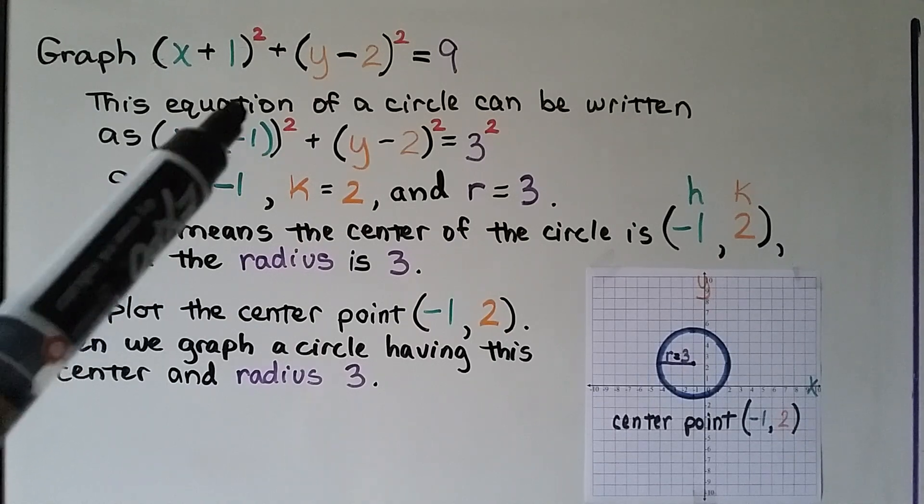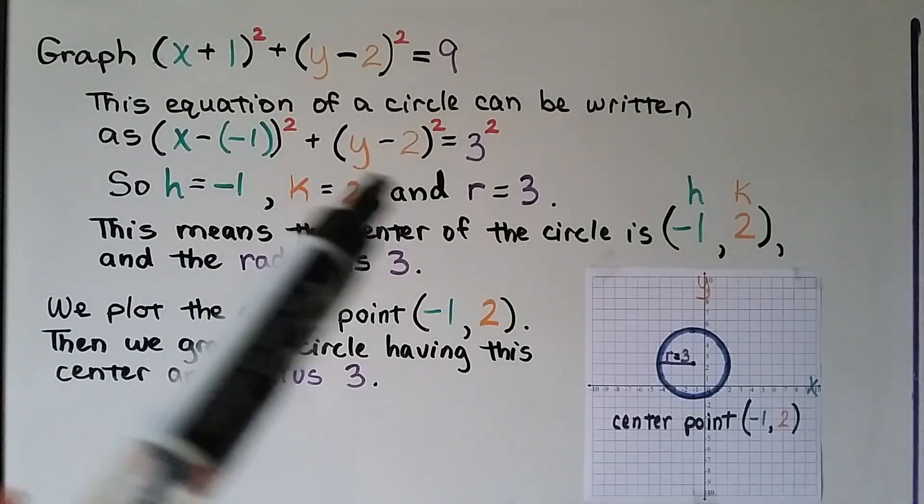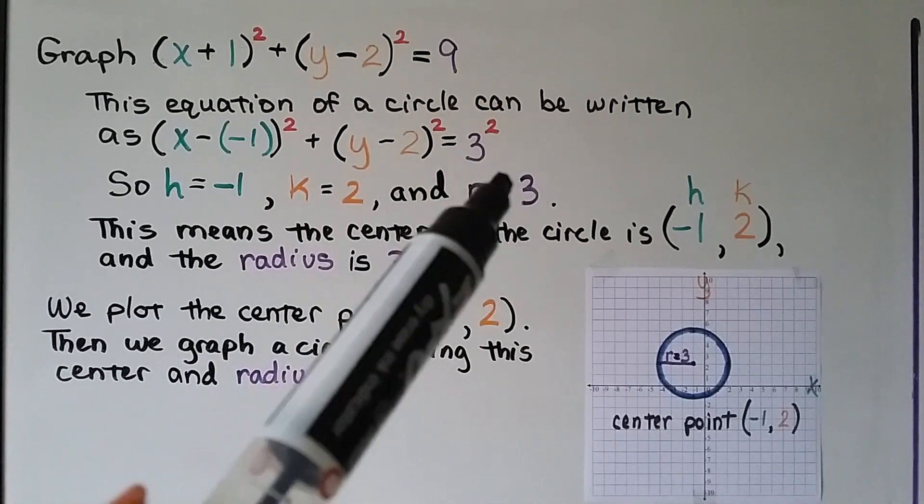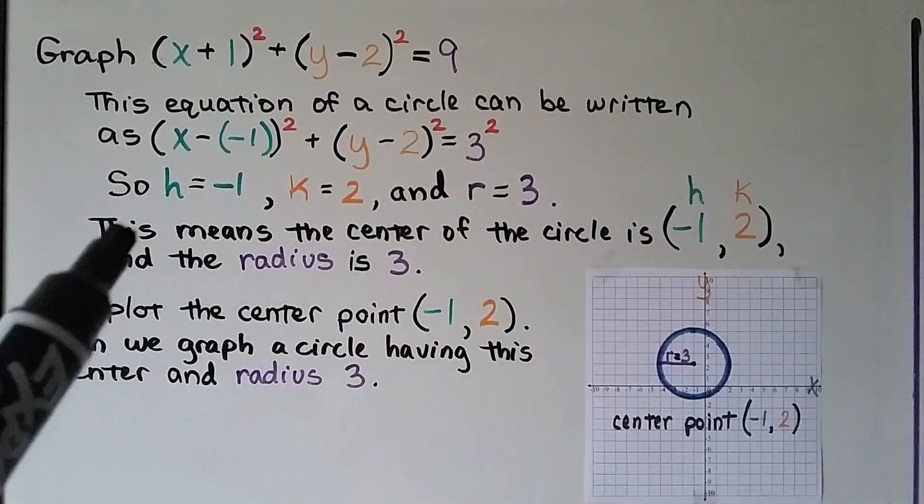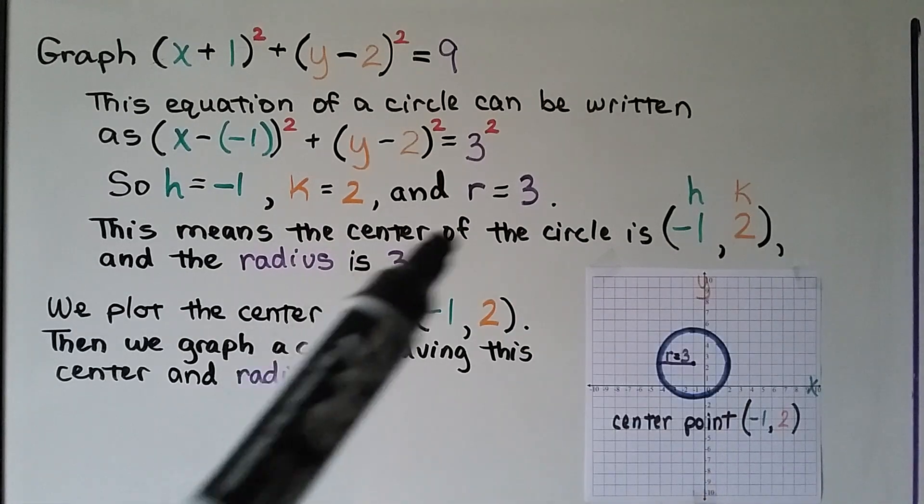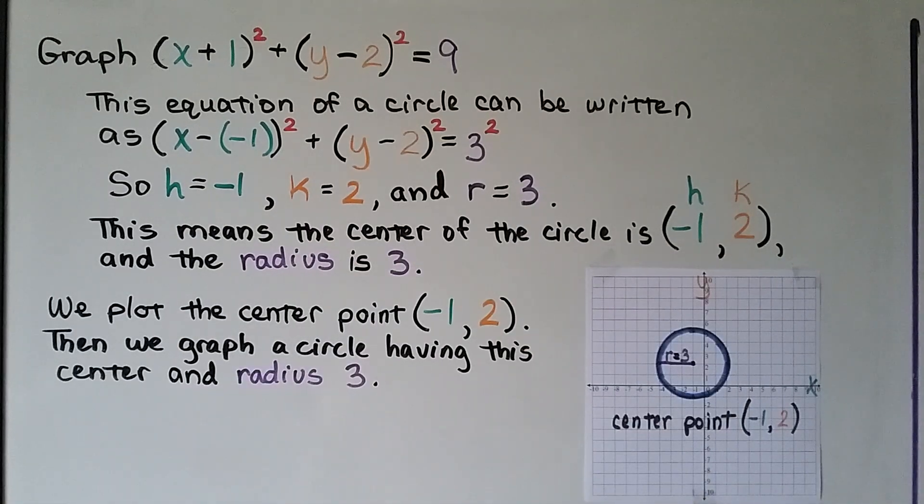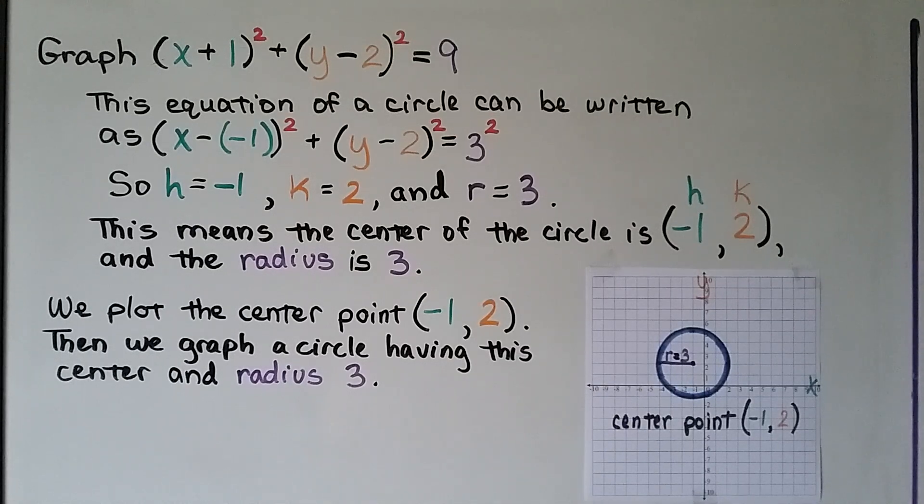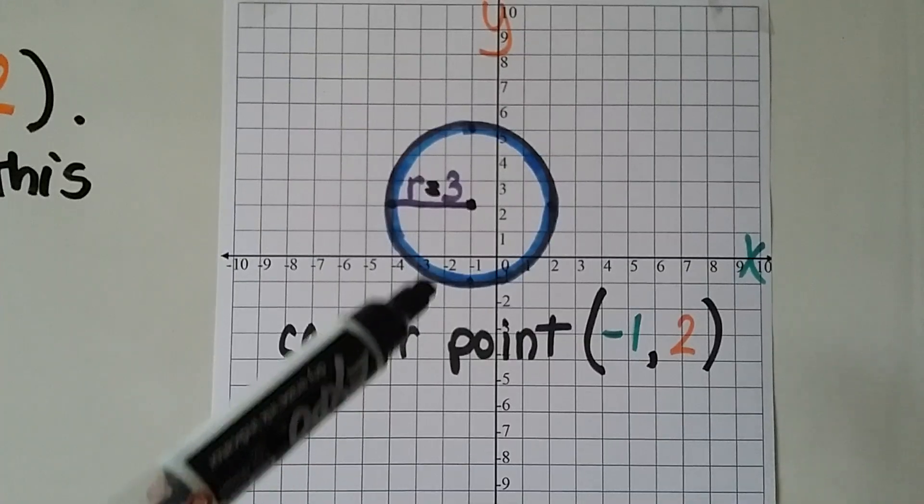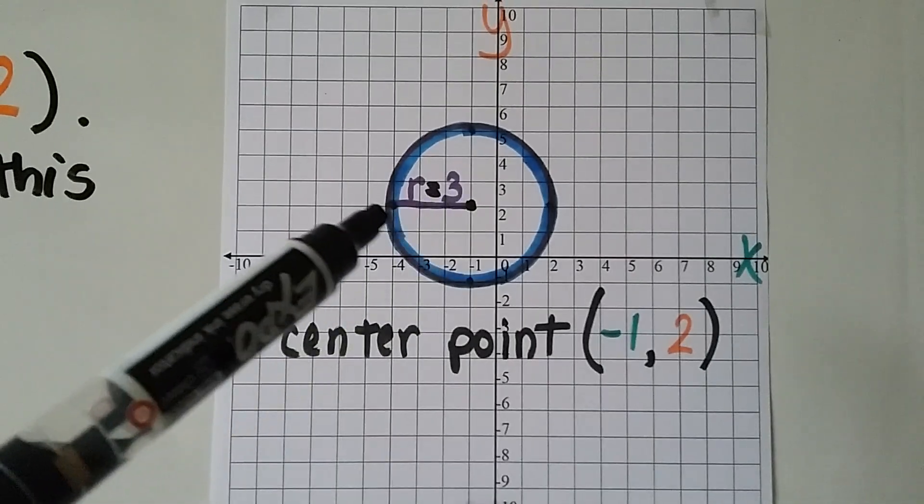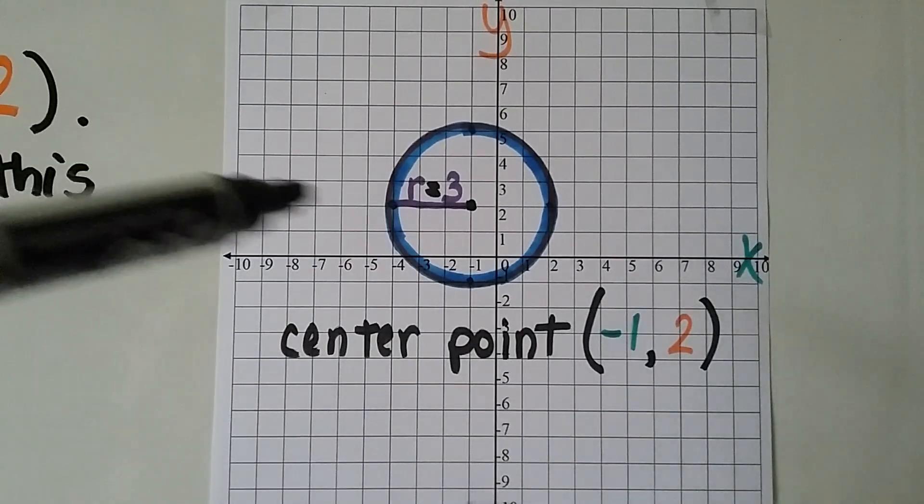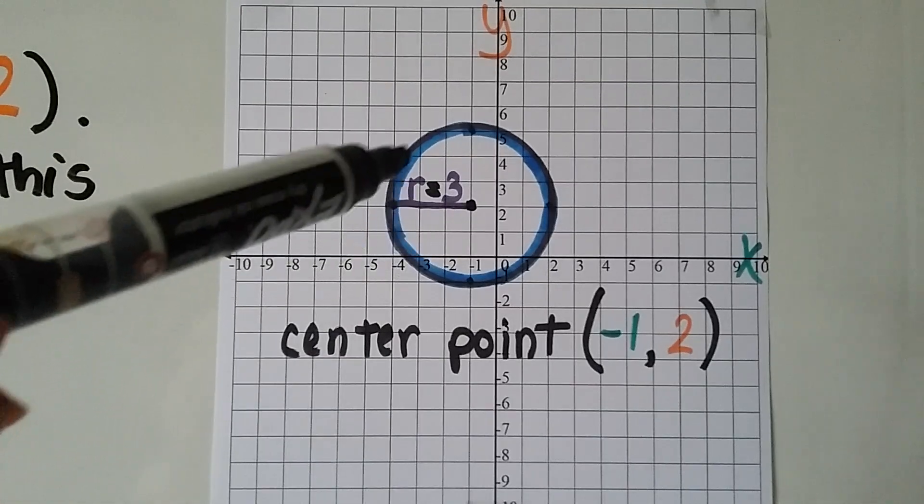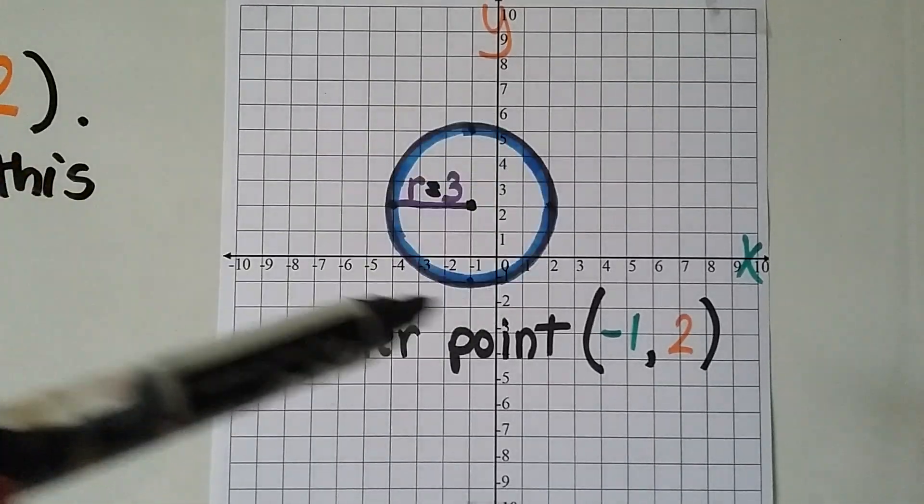So our h is a negative 1, our k is a 2, and our r is a 3. And remember, hk is the center, so that's a negative 1, 2, and the radius is a 3. We plot the center point, negative 1, 2. Then we graph a circle having this center and a radius of 3. So it's got a center of negative 1, 2, and it's got a radius of 3. We can actually just do a radius of 3 all the way around the center point and make our circle.